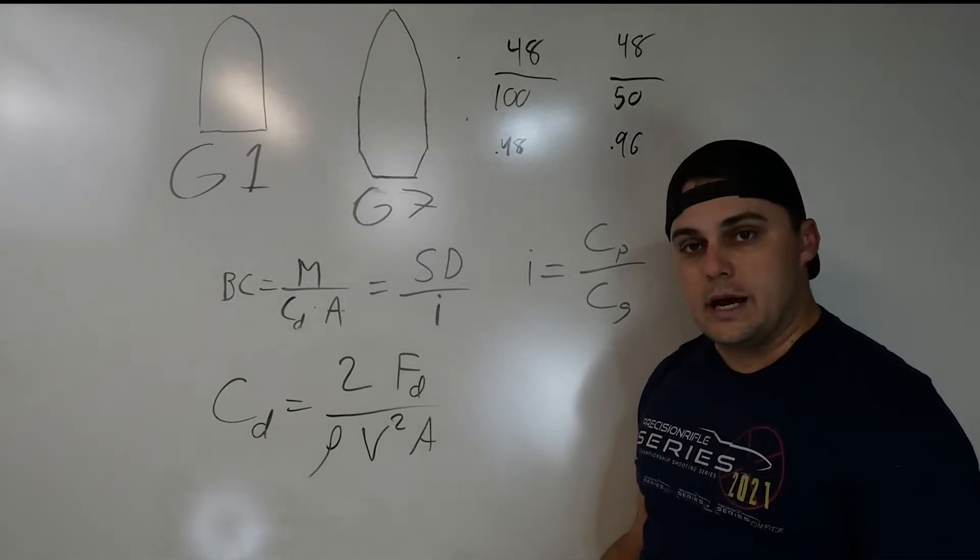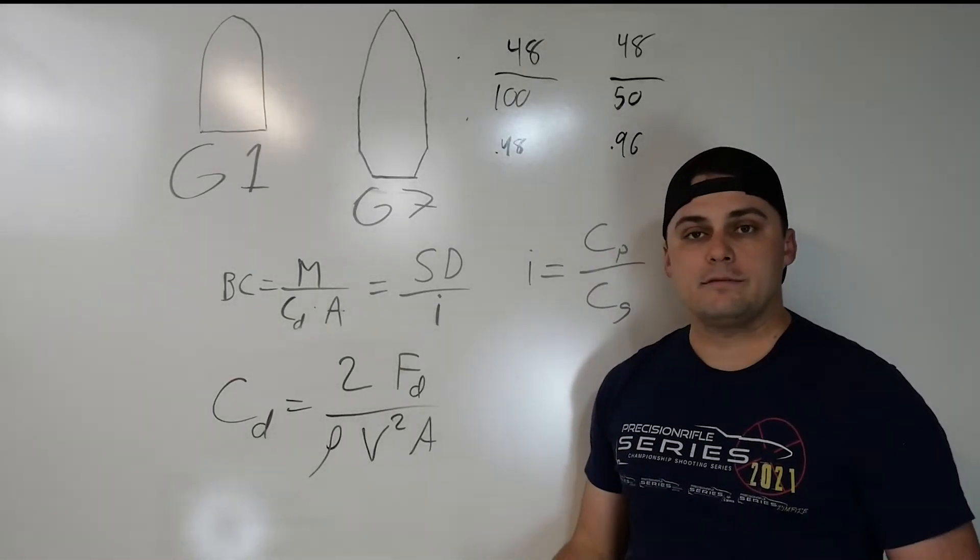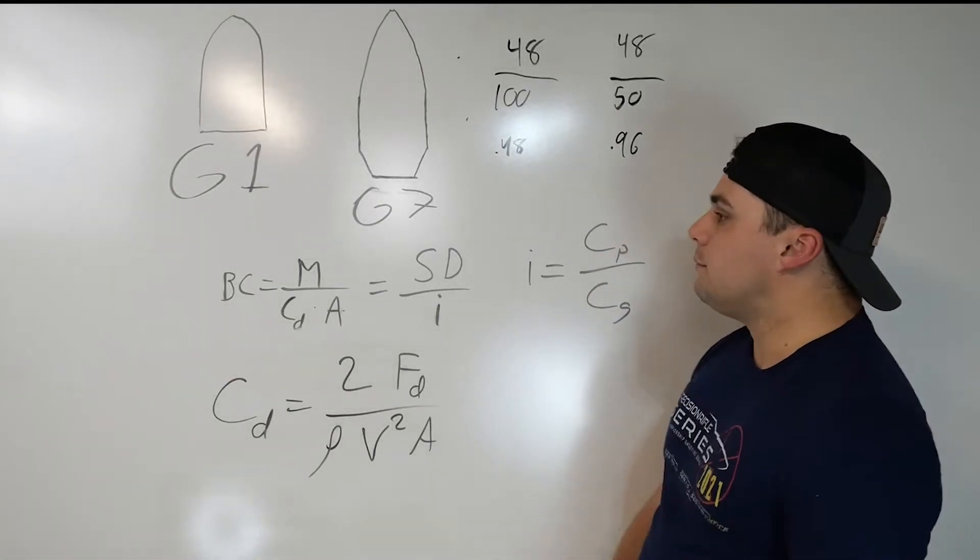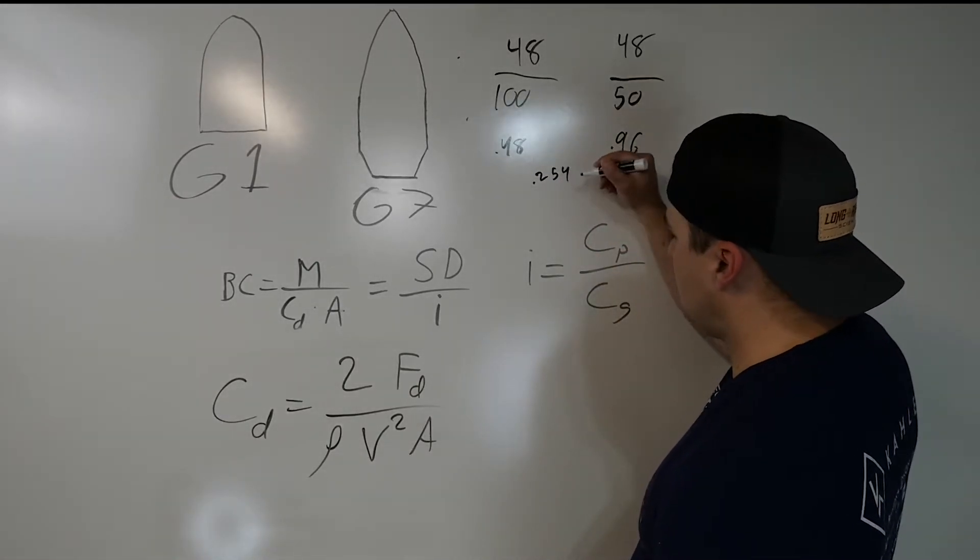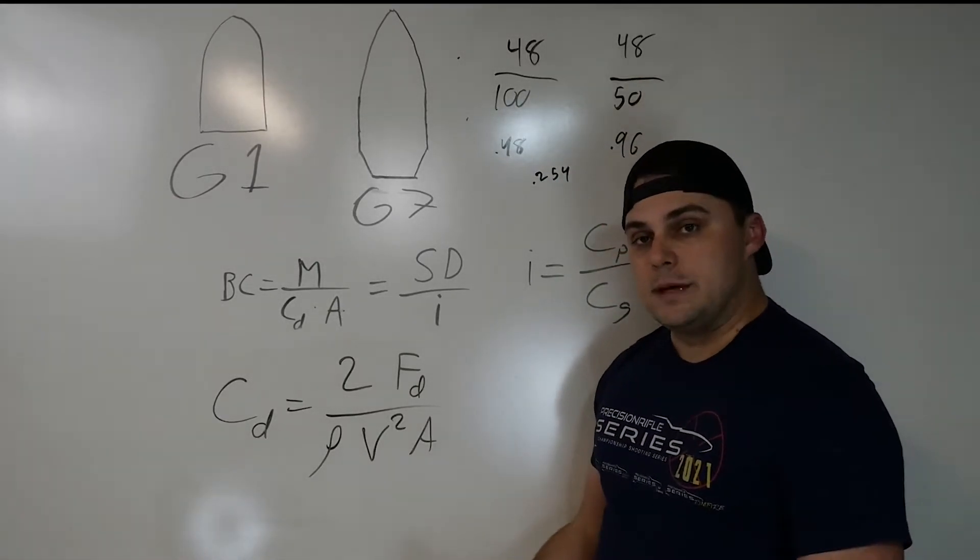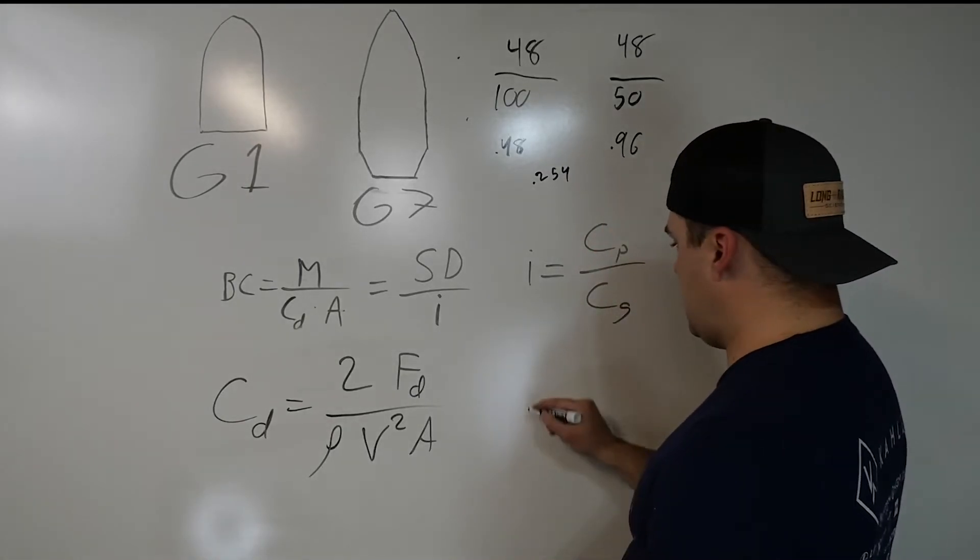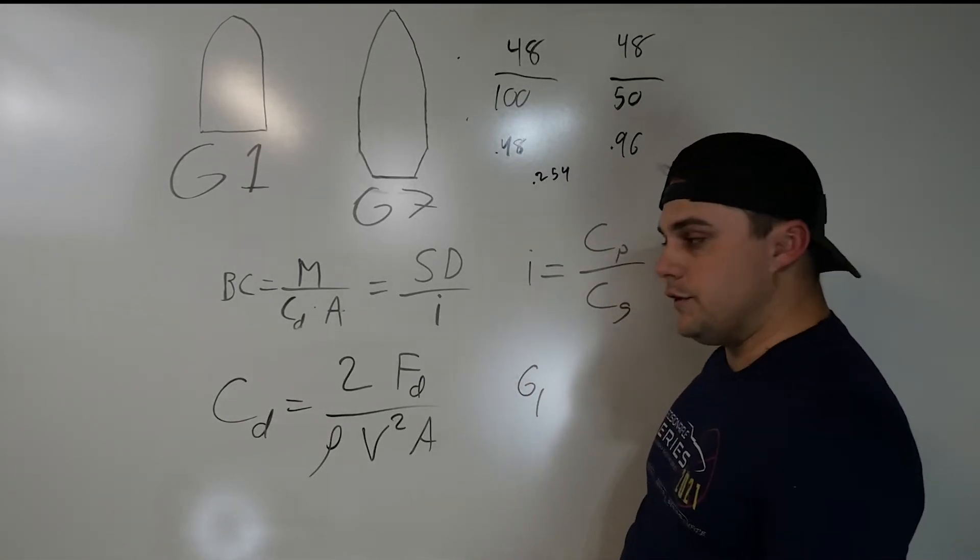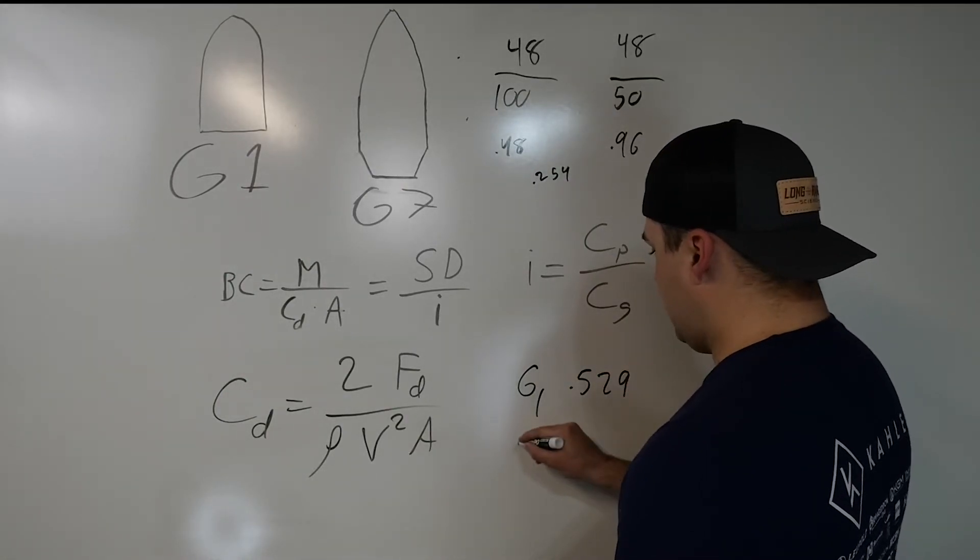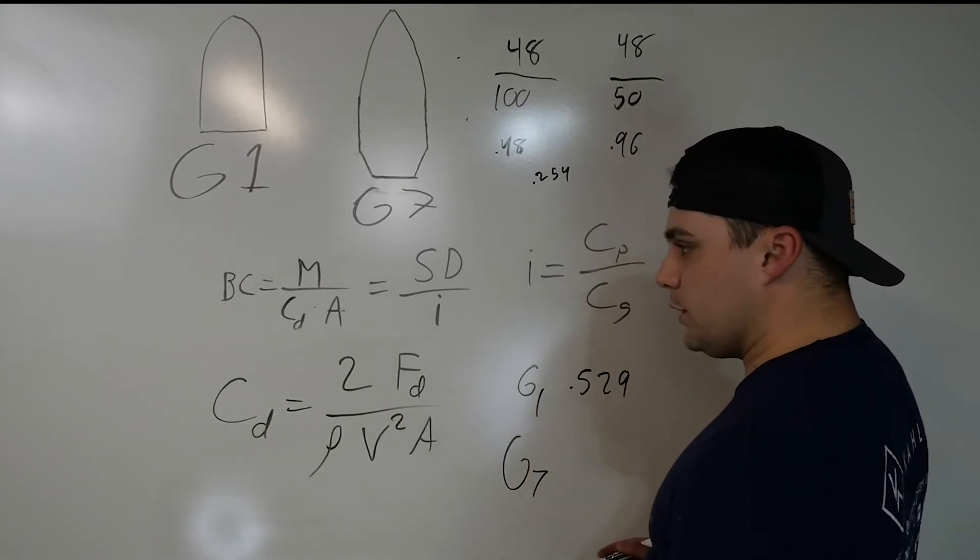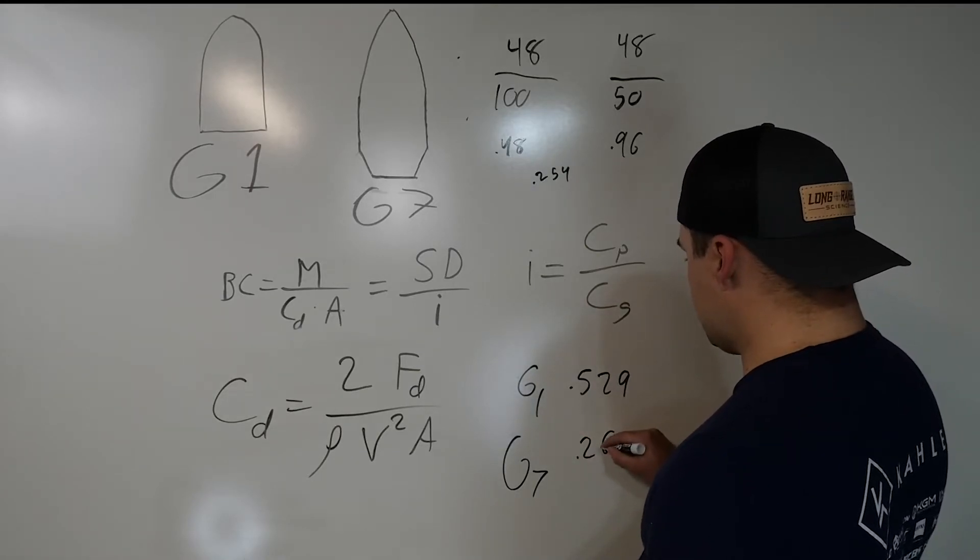So with the bullet I'm using, I'm using a 6mm 105 Berger VLD bullet. My sectional density comes out to be 0.254. So now what that gives me is that gives me a G1 ballistic coefficient of 0.529 and I get a G7 ballistic coefficient of 0.260.